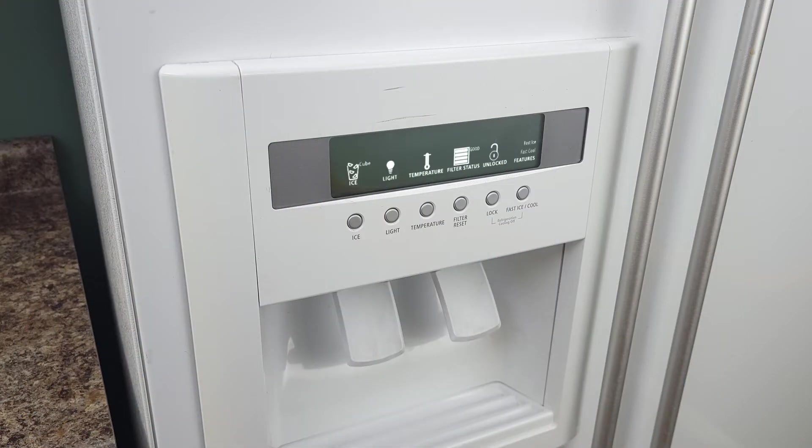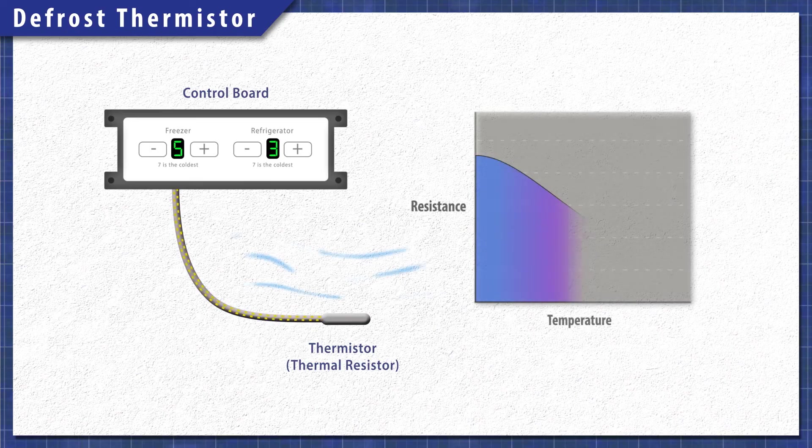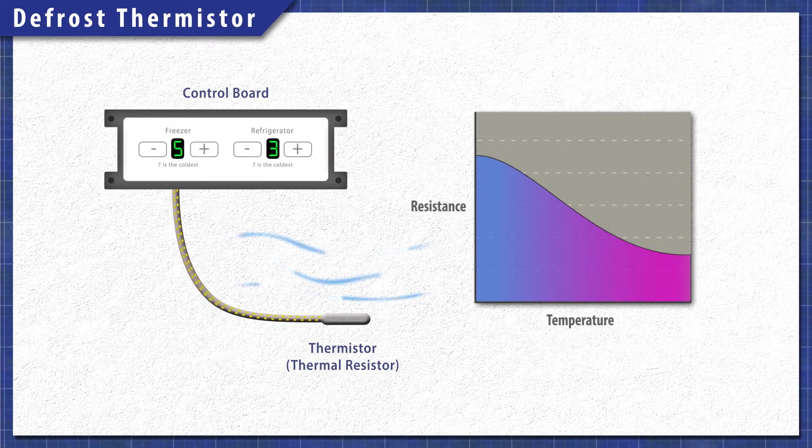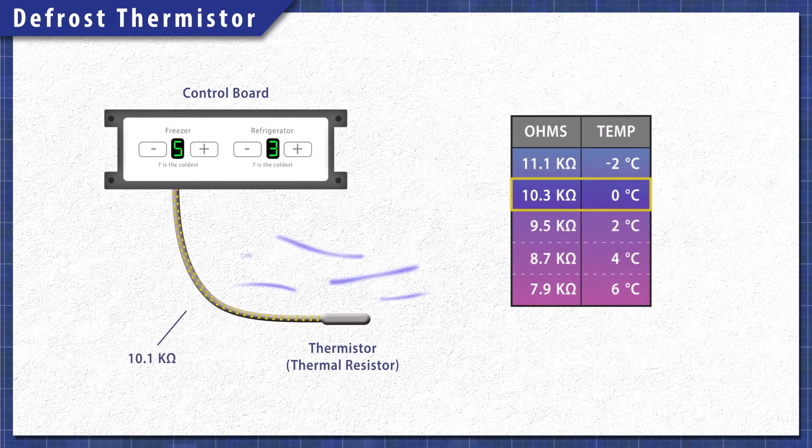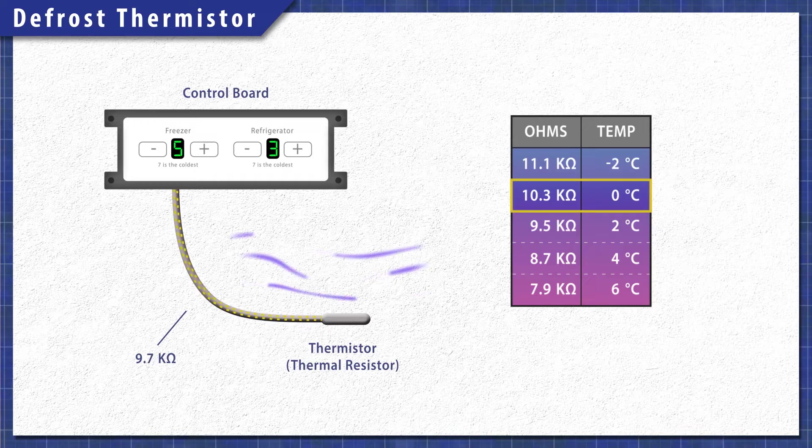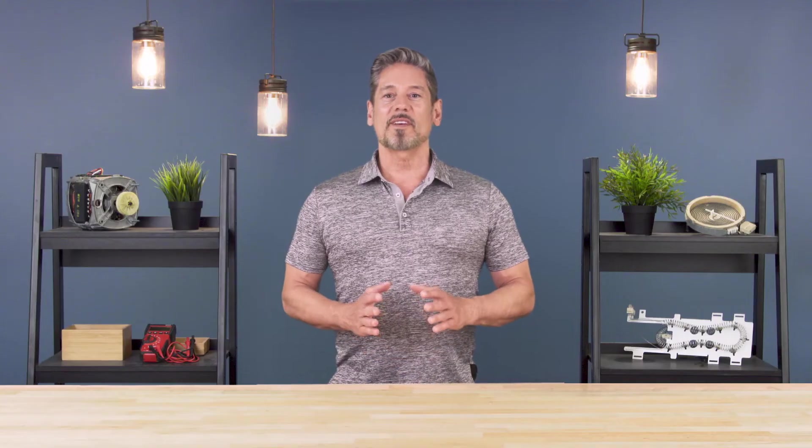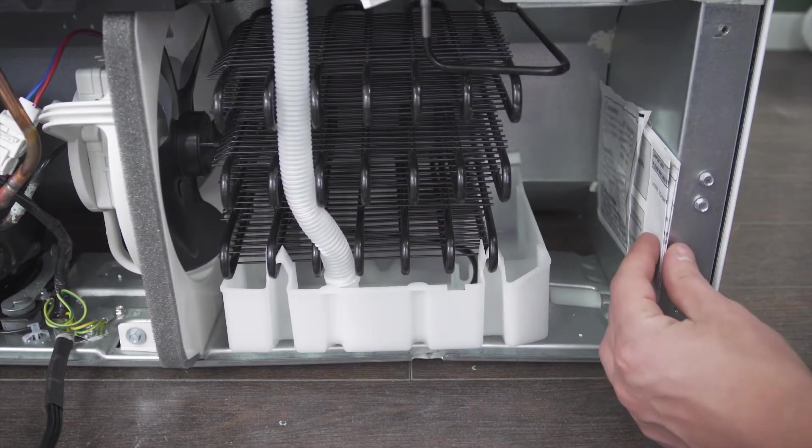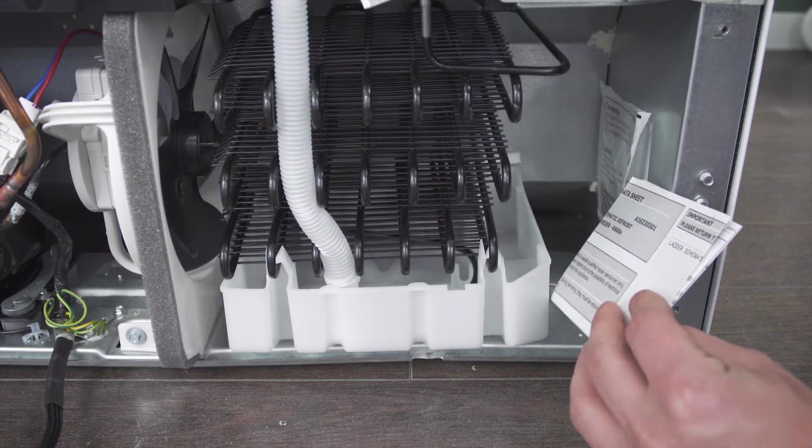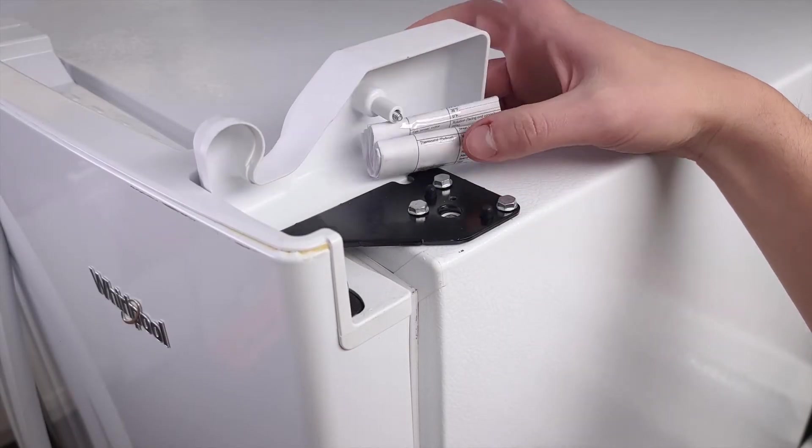Models that use a control board will often have a sensor. The thermistor is a heat sensitive resistor. As the temperature changes, so does the resistance. The control board monitors the resistance to determine the temperature. To test the sensor, it can be helpful to use a resistance chart, which is sometimes printed on the tech sheet. The tech sheet is normally behind the kick plate. It also might be mounted at the back, or will be hidden under one of the top hinge covers.